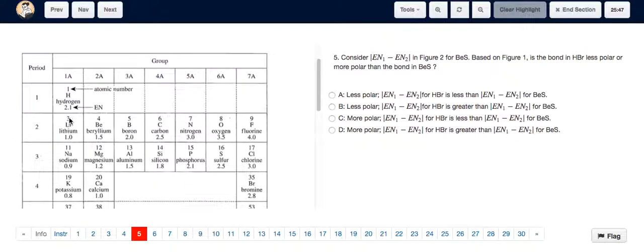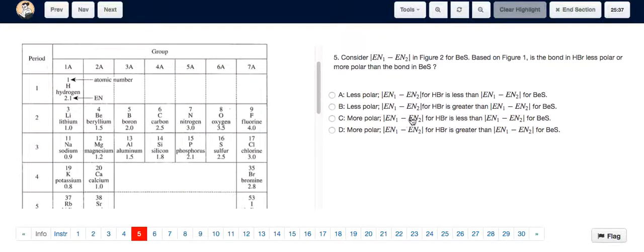We can calculate it for hydrogen bromide. Hydrogen is 2.1 and beryllium is 1.5. Sorry, bromide is 2.8. So when you subtract, you get 0.7.